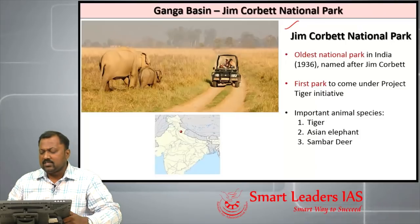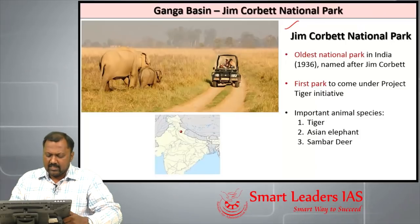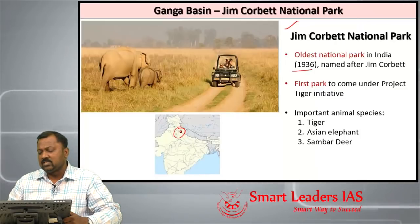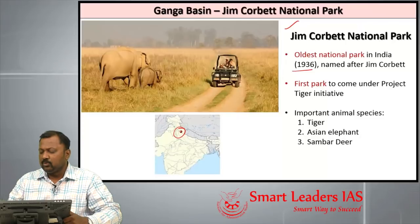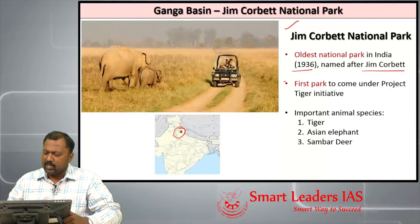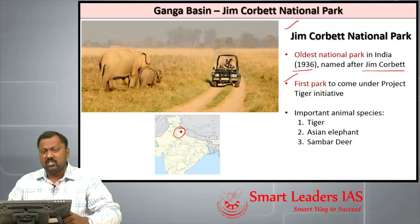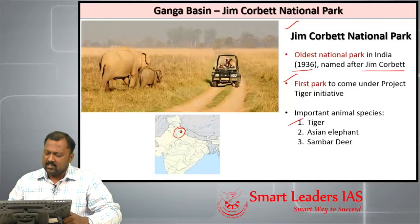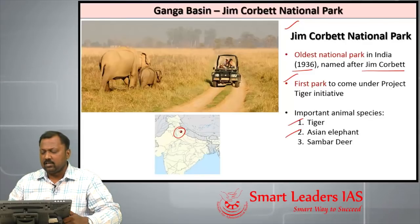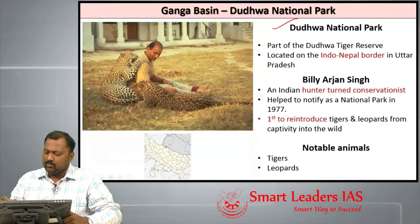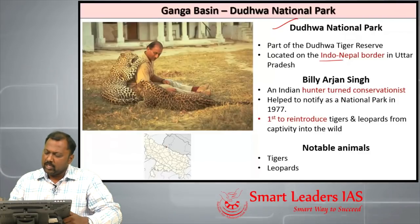Jim Corbett National Park is the oldest national park in India, located in Uttarakhand. It was established in 1936 and named after the famous tiger hunter Jim Corbett. It was the first park to come under Project Tiger. Important animal species in Jim Corbett include tiger, Asiatic elephant, and sambar deer.